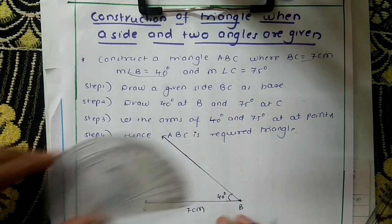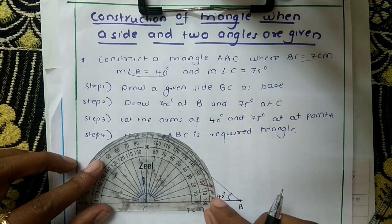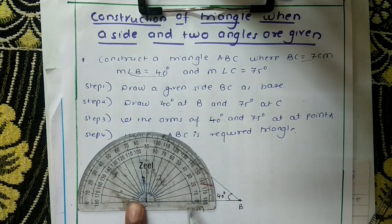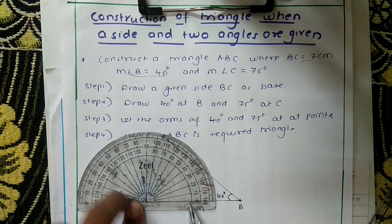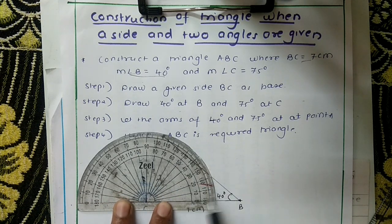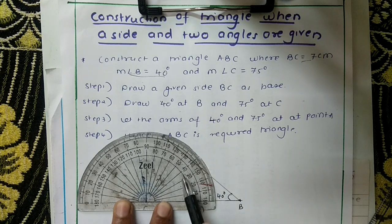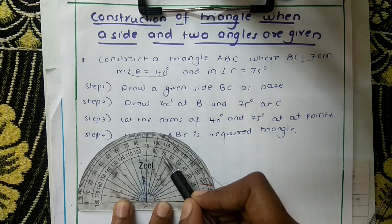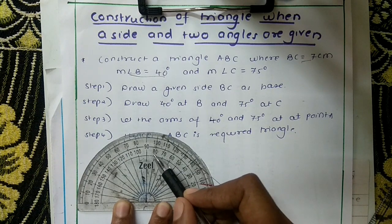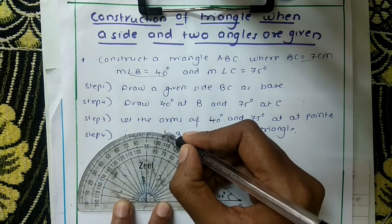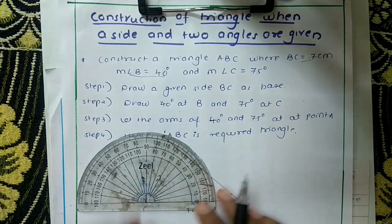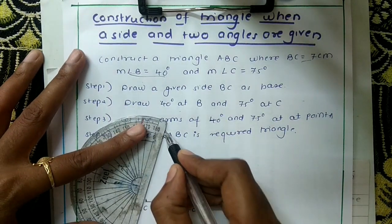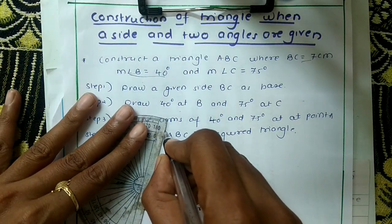At C you have to draw 75 degrees. Keep here, now you can see the inside 0 is on the side BC, so consider this inside scale. Forget about the outside: 0, 10, 20, 30, 40, 50, 60, and here is 70. In between 70 and 80, the exact midpoint line is 75 degrees. Join this point and this line.